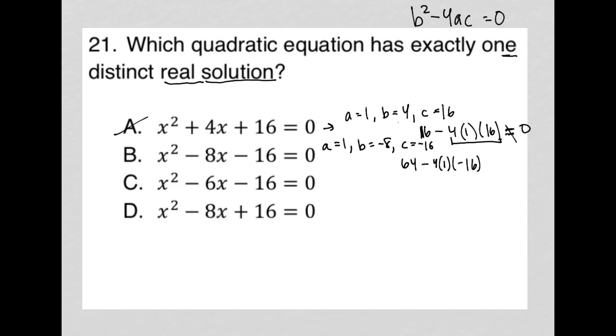This is actually going to work because -4 times 1 is -4. Negative 4 times -16 is positive. Actually, this is not going to work. Positive 64, so we'd have 64 plus 64. So that's also not going to work. That's not equal to zero. So that's gone.